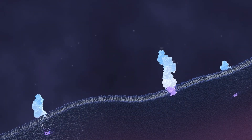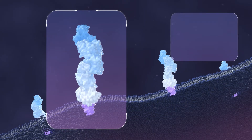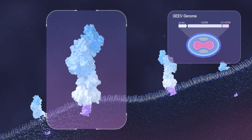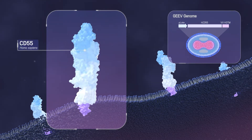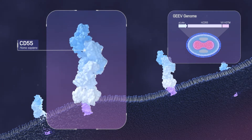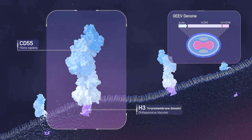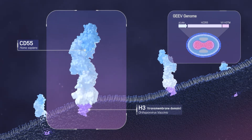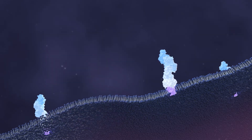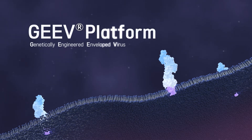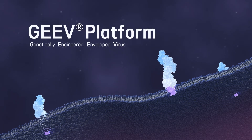To display human CD55 on the surface of the vaccinia virions, Silogen genetically conjugated human CD55 with the transmembrane domain of the vaccinia membrane protein H3. This platform, which provides a genetically engineered enveloped virus, was named GEEV.